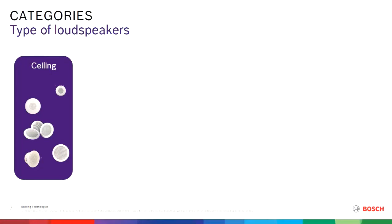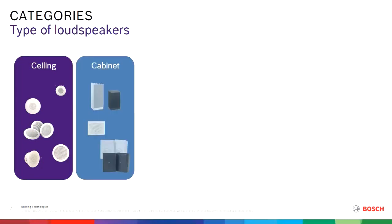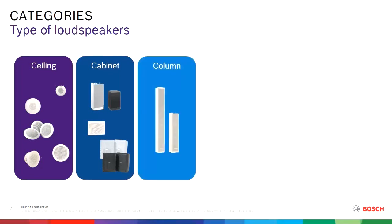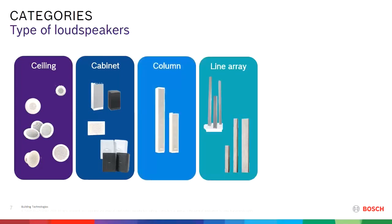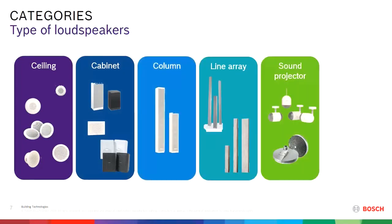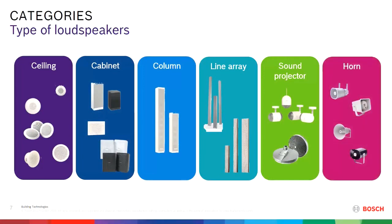Loudspeaker categories — we have six categories defined. You can find those also in our product catalog. The first one is ceiling loudspeakers, cabinet loudspeakers, column loudspeakers, line arrays, sound projectors, and horns. We're going to have a look at all those categories during this session.